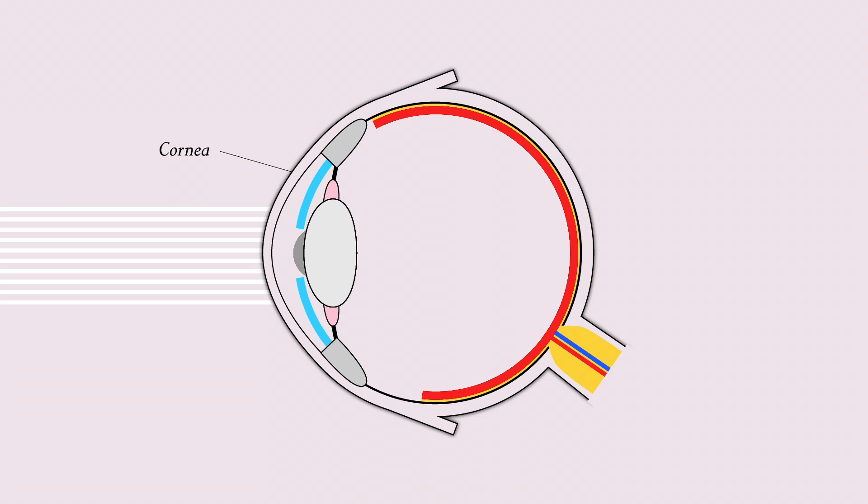When light bounces off an object, like this painting, into our eyes, it first hits the cornea, a film that lays on top of our eyes. This layer bends light towards the pupil, which dilates or contracts to let in more or less light. Once light passes through the pupil, it is sent to the lens, which angles and focuses the light to a point on the outer layer of the retina.